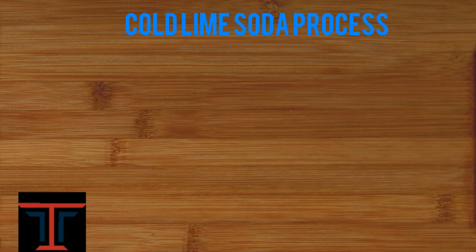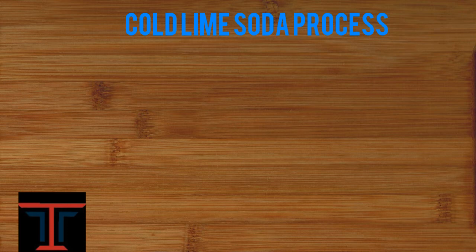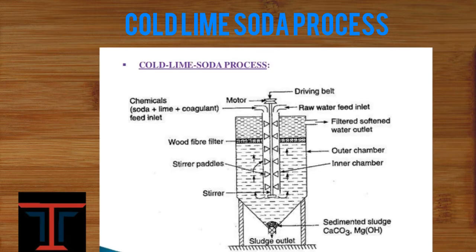Now next comes the cold lime soda process. It is also an important process used to remove impurities from hard water. It is similar to the hot lime soda process but the temperature is very low. It has two inlets: one for soda lime and coagulants, and the other for raw feed inlet for hard water. A dry belt removes the motor so the temperature can go down.